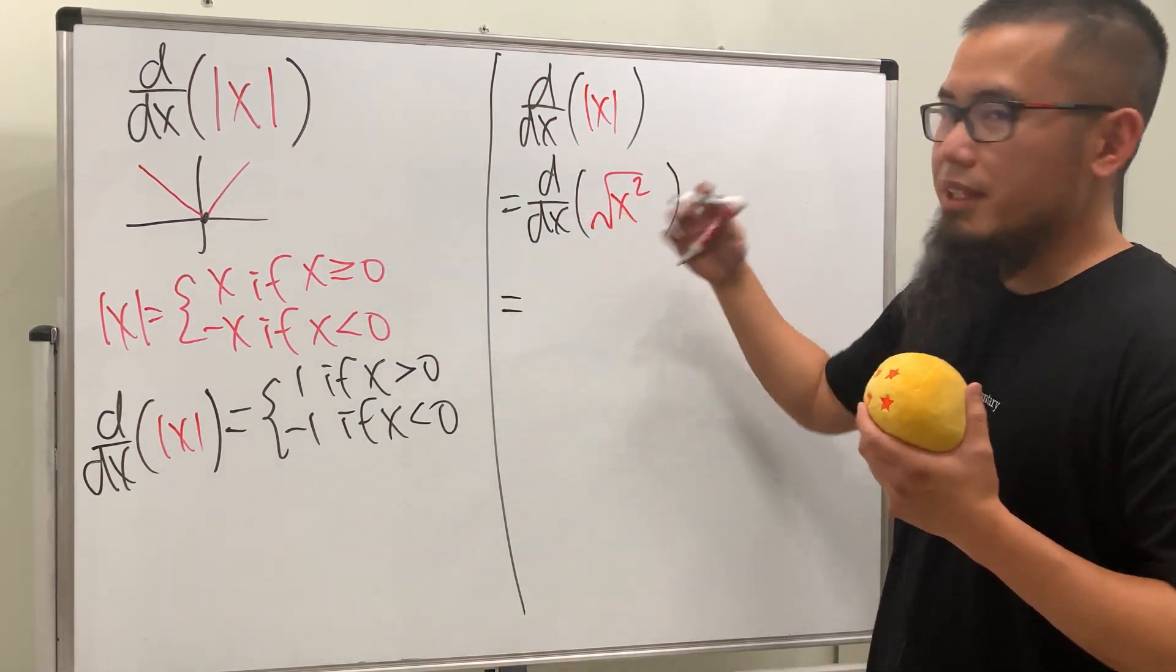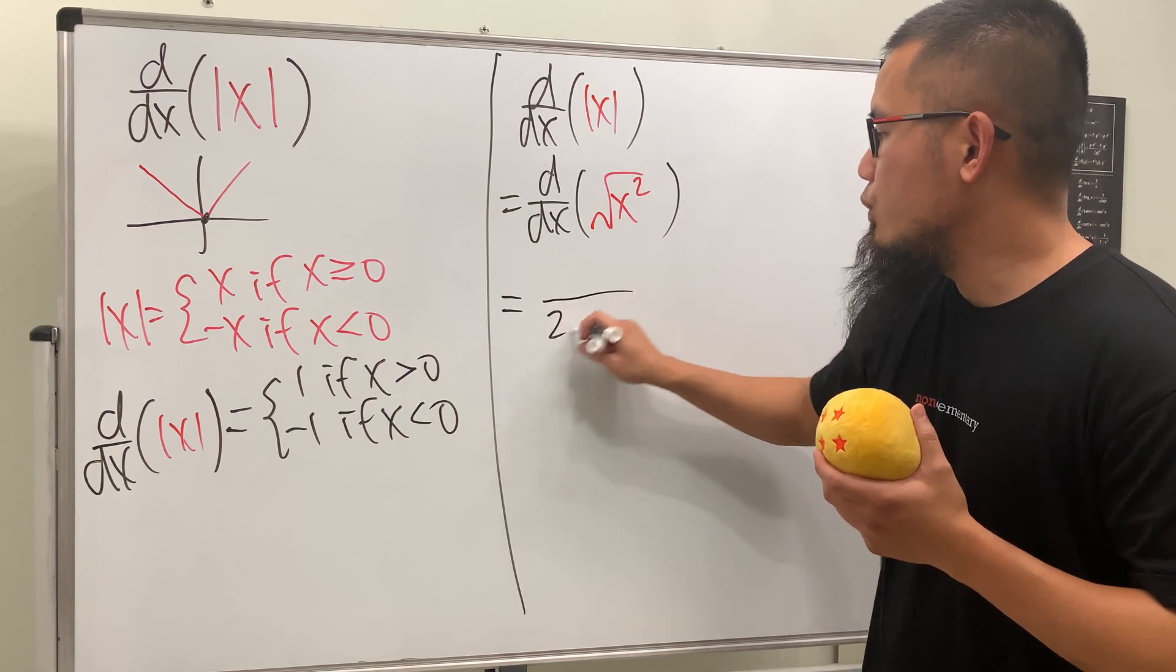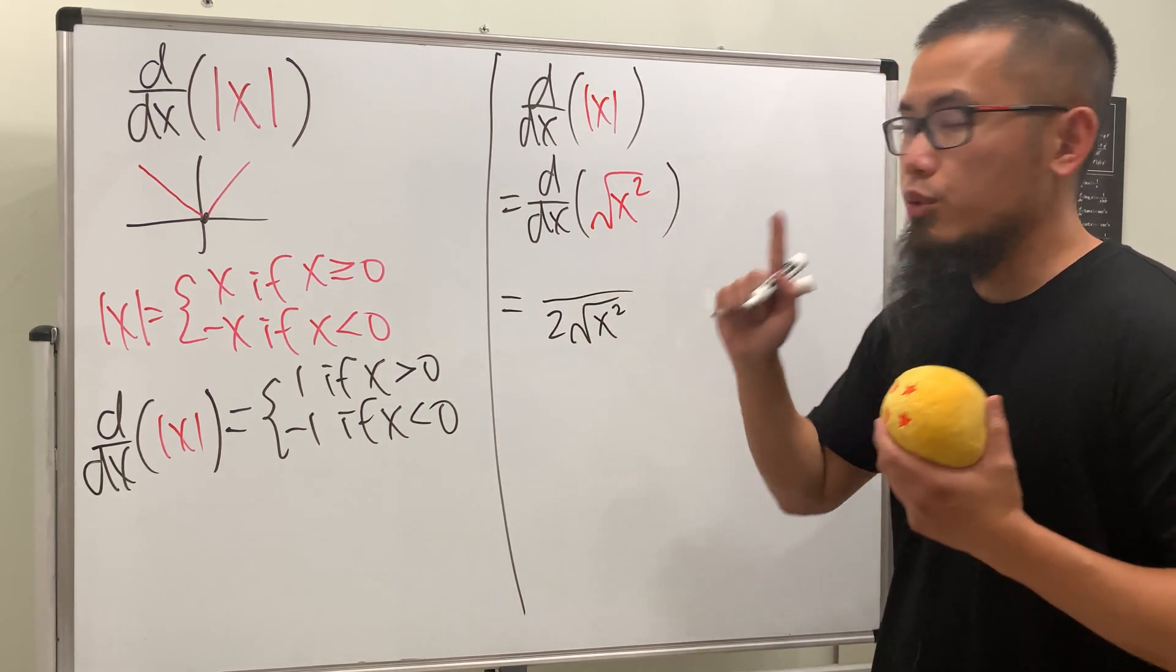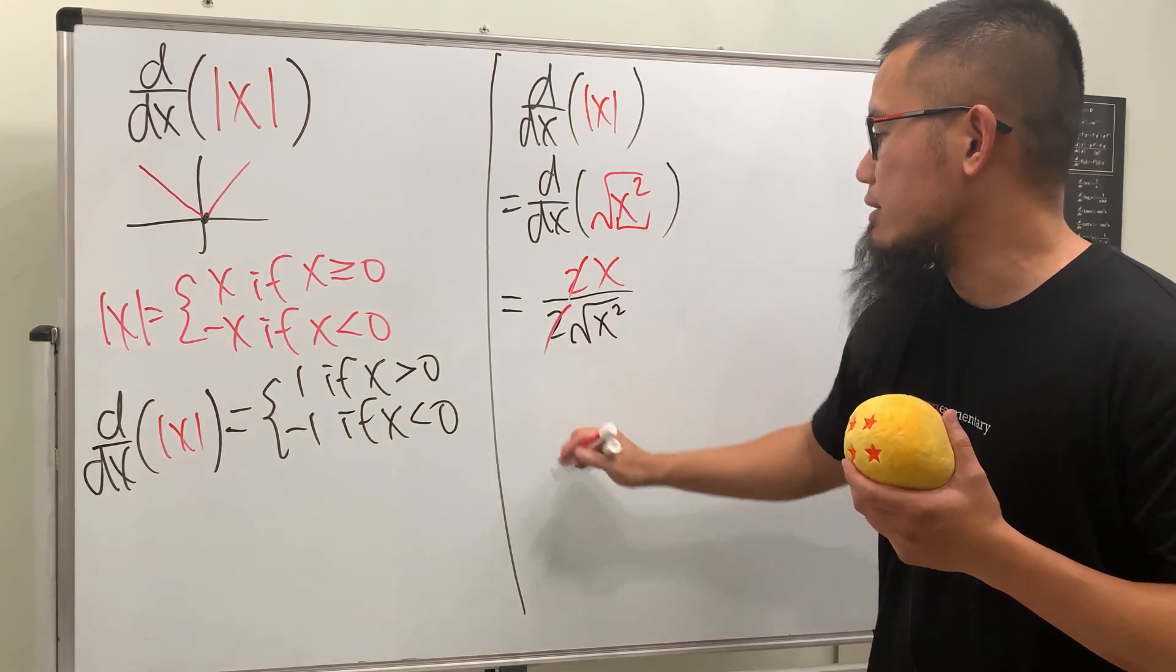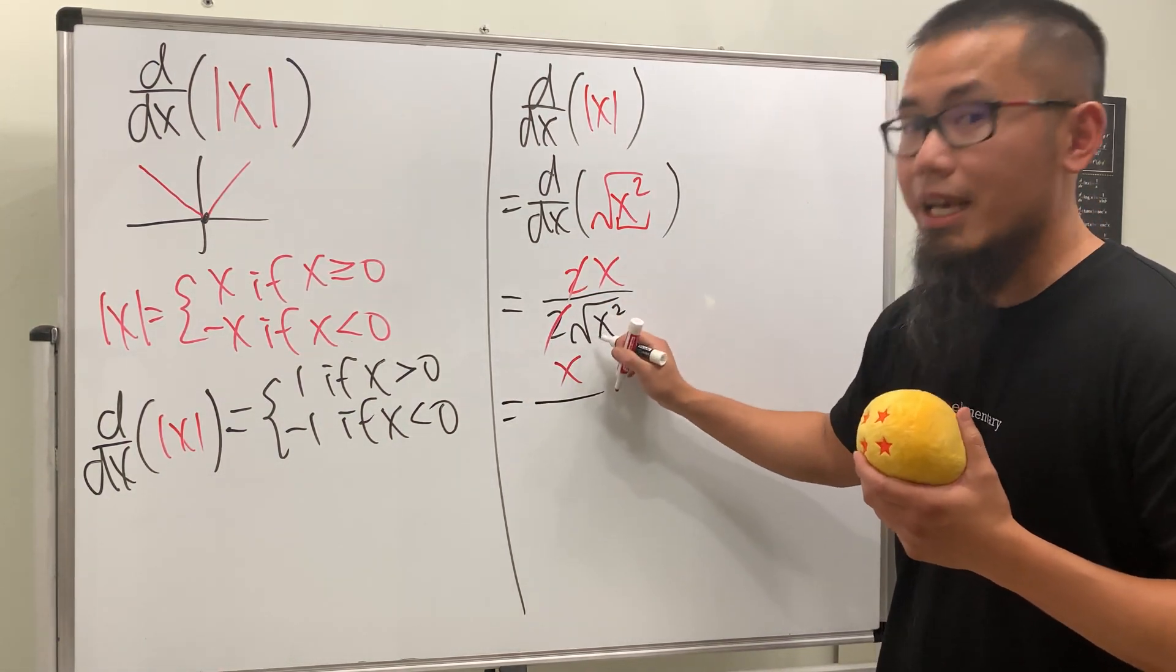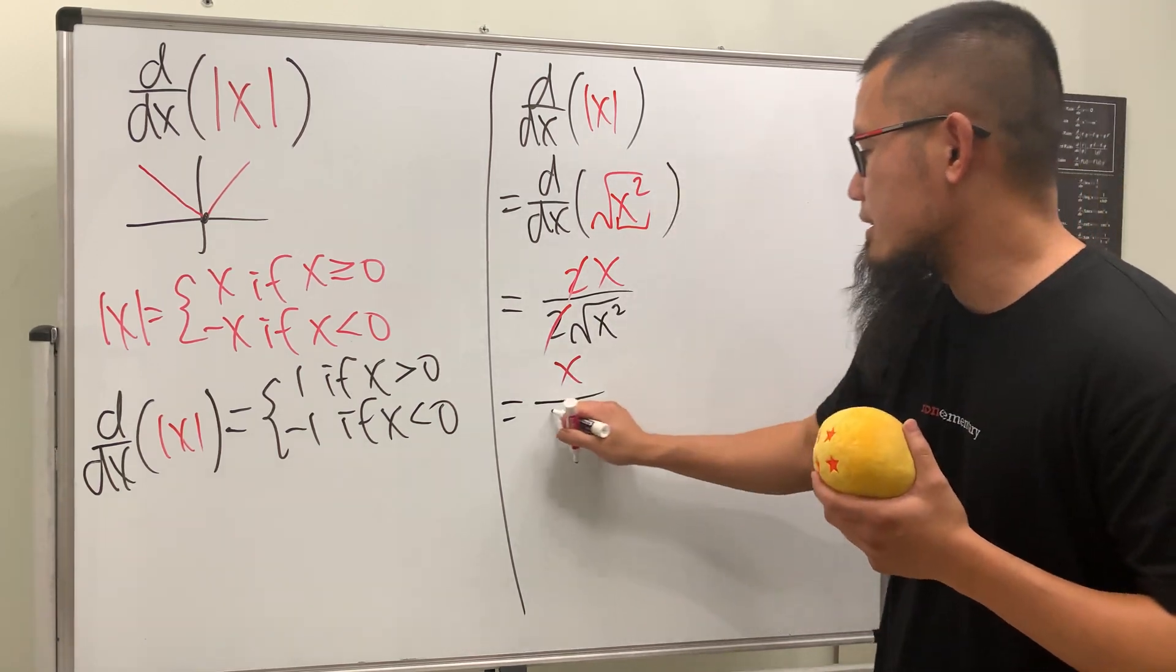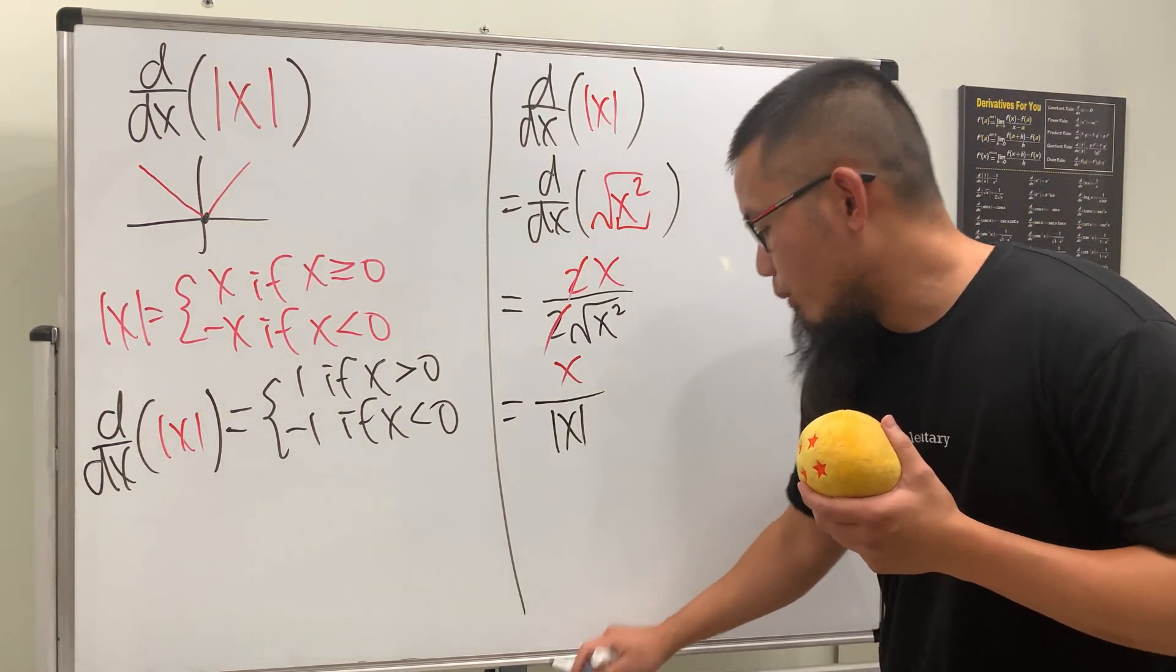Differentiating square root is one over two square root of that, which is x squared. Now use the chain rule: multiply by the derivative itself, which is 2x. This and that will cancel. On the top we get x, on the bottom we get absolute of x. Very nice.